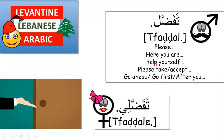And don't forget to use tfaddal, or tfaddali if you're asking someone to have food. So if you're having someone over for dinner or offering someone some of your food, you can say tfaddal or tfaddali. It's a very common phrase and can also mean please, here you are, help yourself, or go ahead. It's a very flexible and widely used term in Arabic.